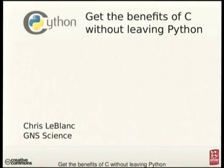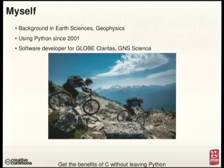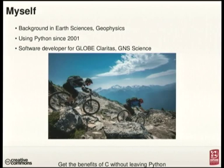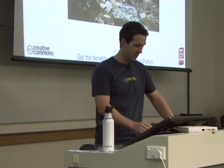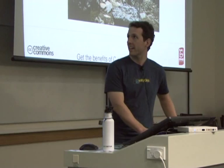The talk I'm going to give is: getting the benefits of C without leaving Python. Let's get right into it, because there's a ton of slides to cover. I have a background in earth sciences, which is really just geology with a peppering of some other stuff, like environmental science and geophysics. I've been using Python since roughly 2001. I'm now a software developer for GNS Science, working on something called the Globe Claire Test. We do a bunch of seismic processing — you would instantly think earthquakes, and I wouldn't blame you, but this is more active seismic — running seismic surveys and processing tens of terabytes or even more that can be generated from that. So we need lots of efficient code, which is generally a lot of C code, sometimes even a bit of Fortran.